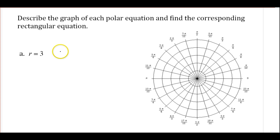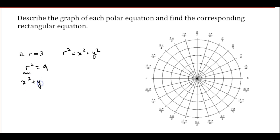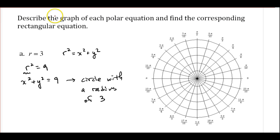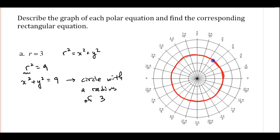For part A, let's first convert this. We're going to use the relationships from the other examples. I know that r² = x² + y². So I square both sides to get r² = 9, then replace r² to get x² + y² = 9. This is a circle with a radius of 3 — every point 3 units away from the pole.